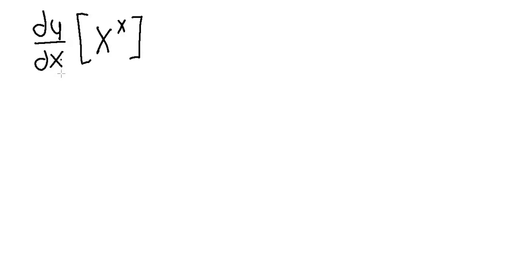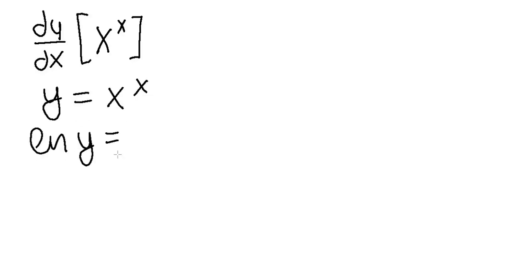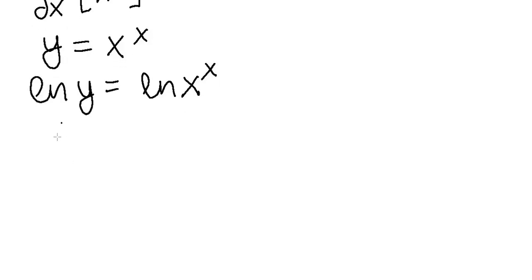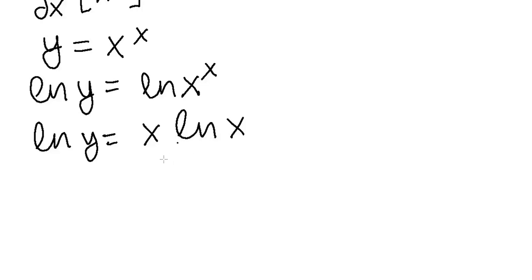Find the derivative of y with respect to x of x to the power x. If y is equal to x to the power x, then the natural log of y will be equal to the natural log of x to the power x. Using the properties of logs, we can say that the natural log of y is equal to x times the natural log of x.